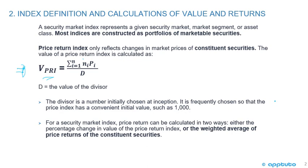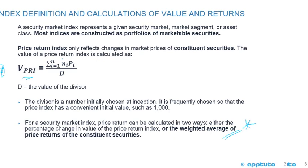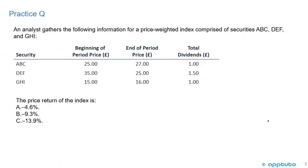For a security market index, price return can be calculated in two ways: either the percentage change in value of the Price Return Index, or the weighted average of price returns of the constituent securities. That's fairly important to understand, and it will become clearer as we go through quite a few calculations with regard to this and some following LOS. The best way to understand these calculations is to jump in and do them.